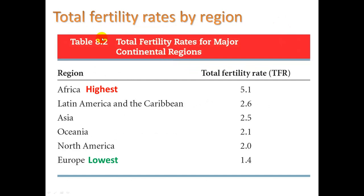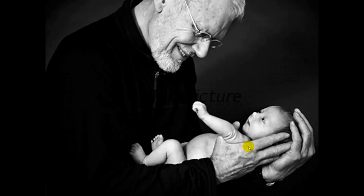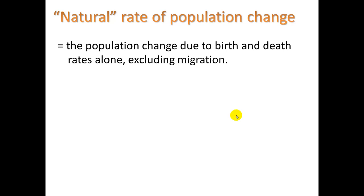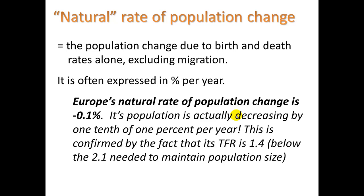Looking at total fertility rates by region: Africa is the highest at 5.1, and Europe is the lowest at 1.4 — meaning Europe is actually a shrinking population, as it is below the 2.1 replacement rate. Even North America — Canada and the US — is below the replacement fertility rate. Europe's natural rate of population change is negative 0.1%, meaning its population is decreasing by one-tenth of 1% per year.